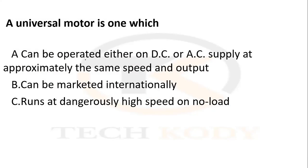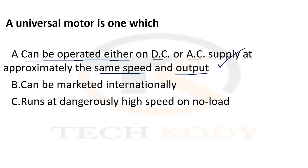A universal motor is one which can operate on either AC or DC supply at approximately the same speed and output. It can be marketed internationally and can run at a dangerously high speed on no load. The correct answer is: a universal motor is one which can be operated on either DC or AC supply at approximately the same speed and output.